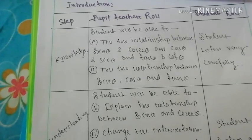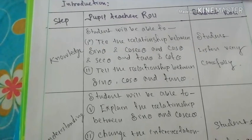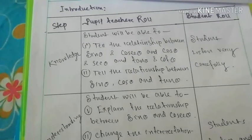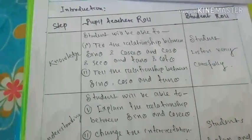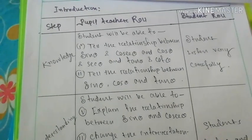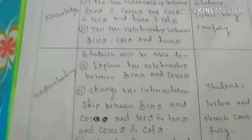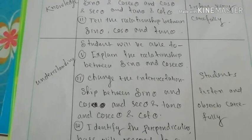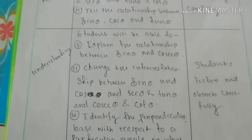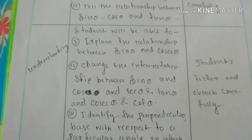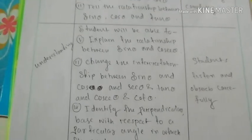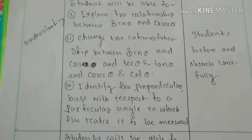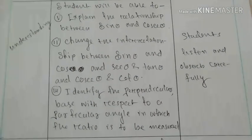The first step is knowledge. Pupil-teacher role: the student will be able to tell the relationship between sin theta and cos theta, and sec theta and tan theta. Number two, tell the relationship between sin theta, cos theta, and tan theta. The student listens very carefully. The second step is understanding: the student will be able to explain the relationship between sin theta and cos theta. Number two, change the interrelationship between sin theta, cos theta, sec theta, and tan theta. Number three, identify the perpendicular base with respect to a particular angle for which the ratio is to be measured. The student listens and observes carefully.